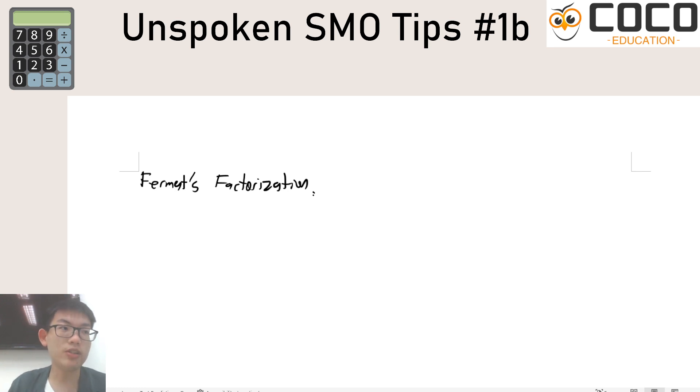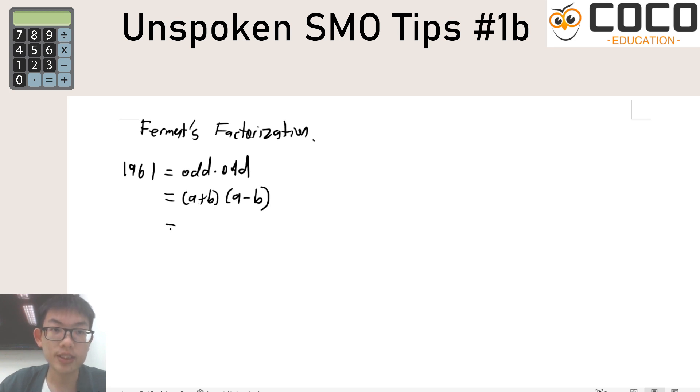During the previous video I talked about using identities to try to factorize some numbers and one of the identities that I emphasized is the difference of squares. I said that if you have a number like 1961 and you try to write it as a factorization of an odd number times an odd number then it should be actually possible to write the two odd numbers as a sum and a difference of two integers, i.e. it should be a difference of two squares.